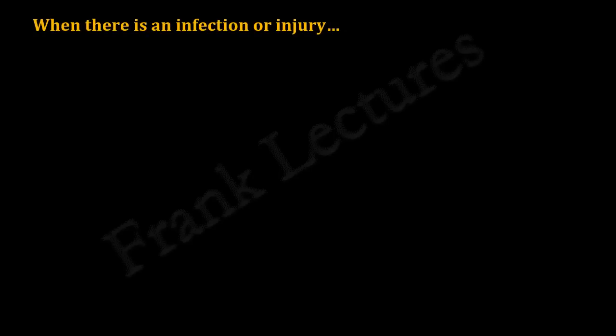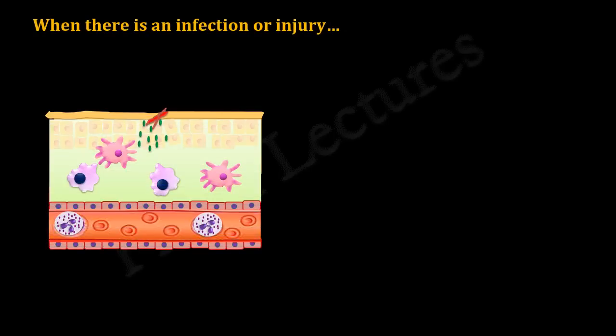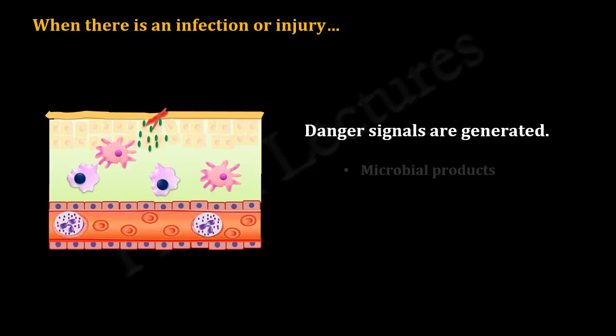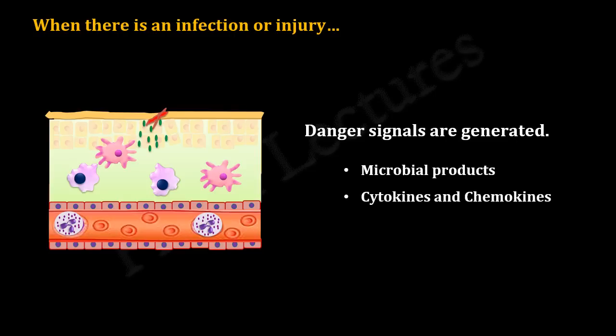When there is an infection or injury in our body, danger signals are generated. Danger signals are the various molecules produced during an infection or injury — for example, products of invading microbes, cytokines and chemokines produced by innate cells during the inflammatory response, and complement proteins.